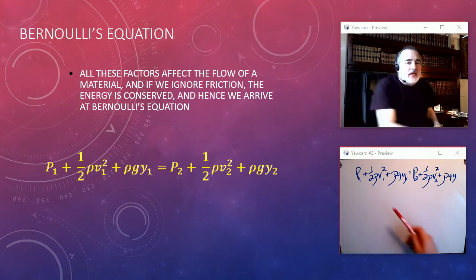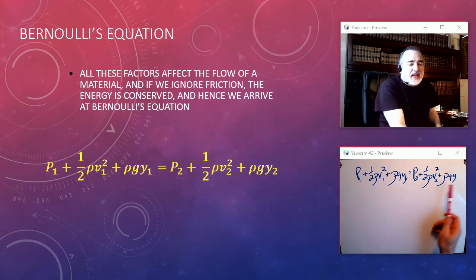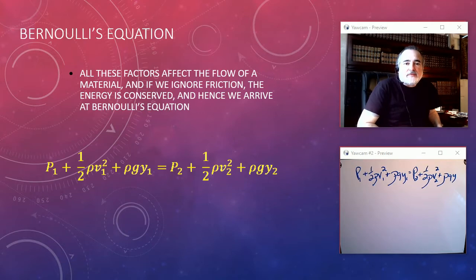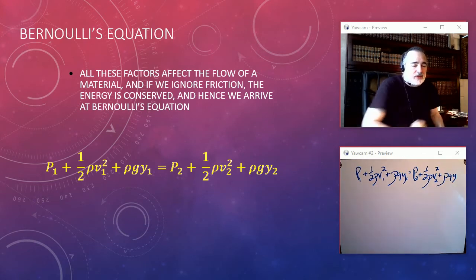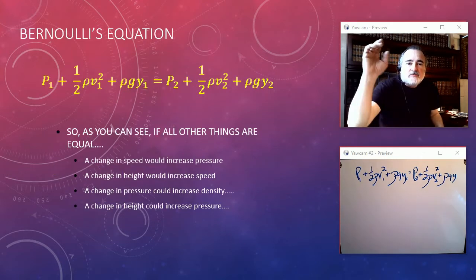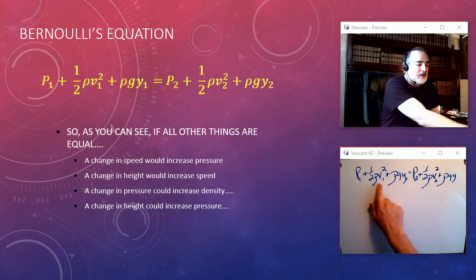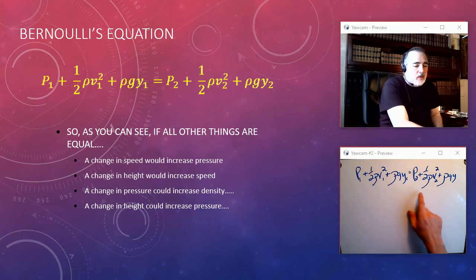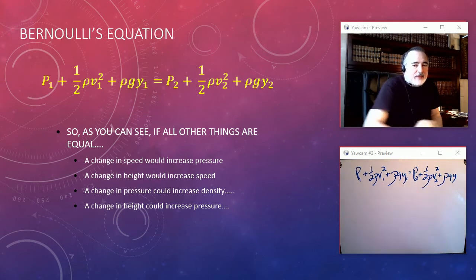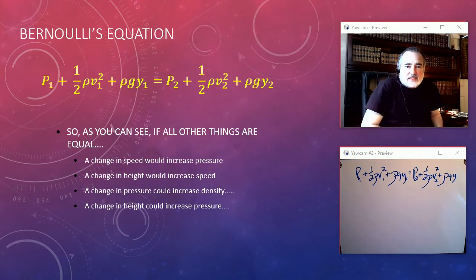And what Bernoulli's equation really says is that, all the other things being equal, if I change the pressure, something has to give on the other side. So we have an equation—it's a statement of the conservation of energy, being with height you have a potential energy and a conversion into kinetic energy, and the equation of continuity. So it's all other things being equal: if I change the speed in something, it would increase the pressure; if I change this speed, if all the other things being equal, if I go from this speed to this speed, something would have to give—either the pressure would change, maybe the height changes, a change in pressure could increase density, a change in height could increase pressure.